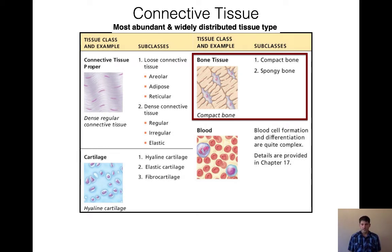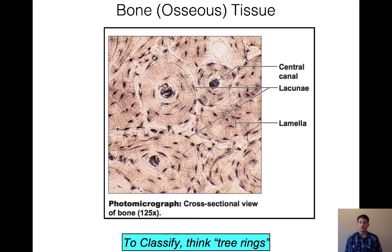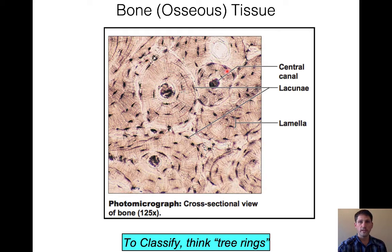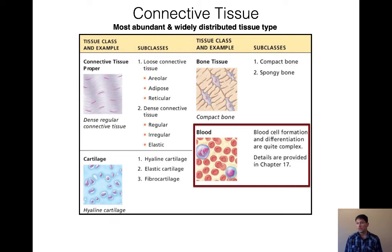Next tissue is bone tissue, with two subclasses: compact and spongy bone. You've probably already seen bone tissue in lab. We have osteons with tree-ring-like structures around a central canal — those are called lamellae. We see lacunae inside those lamellae, and inside the lacunae would be osteocytes, or bone cells. We'll come back and look at the differences between compact and spongy bone when we get into the skeletal system.